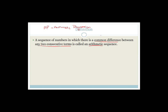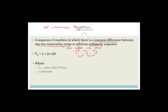A common difference means the difference is the same — common means the same every time. Two consecutive terms means one after the other. If you've got term one, term two, term three, what you add to term one to get to term two has to be the same as what you add to get from term two to term three. The general formula TN for the arithmetic sequence is A plus (N minus 1)D, where A is the first term, D is the common difference, and N is the number of terms.